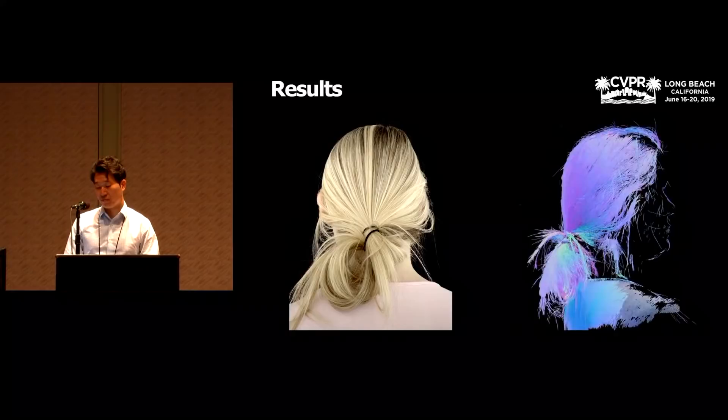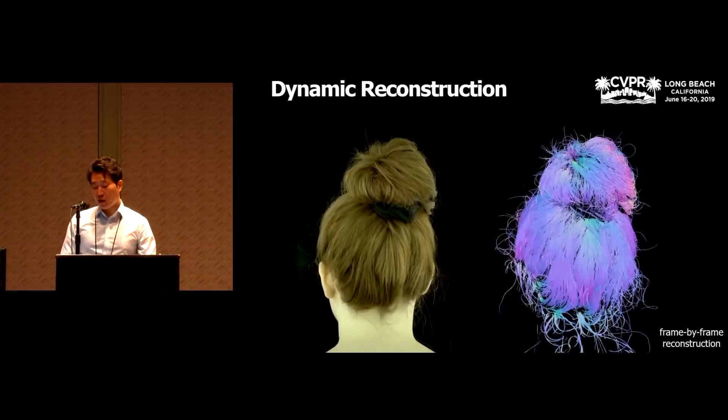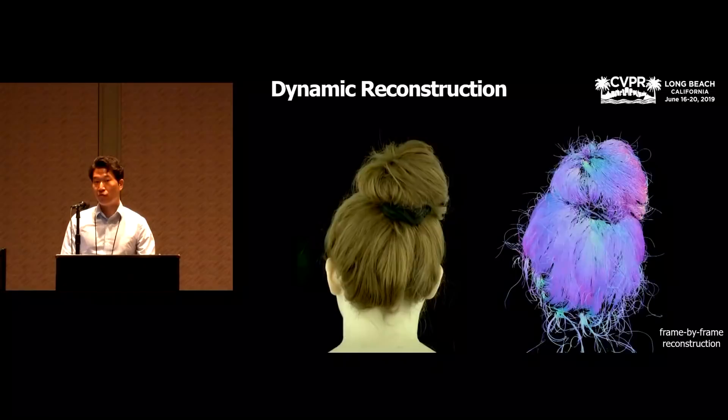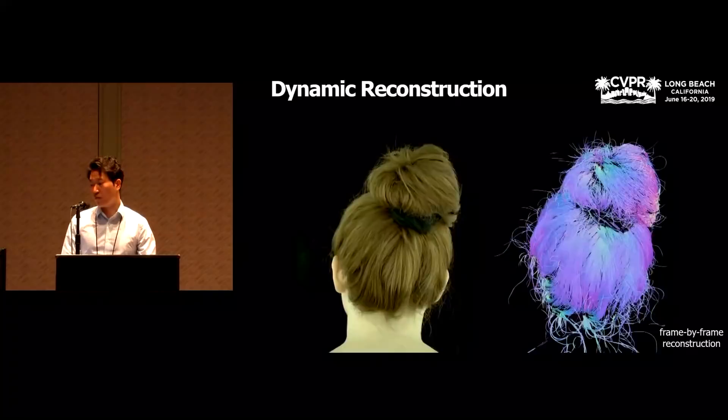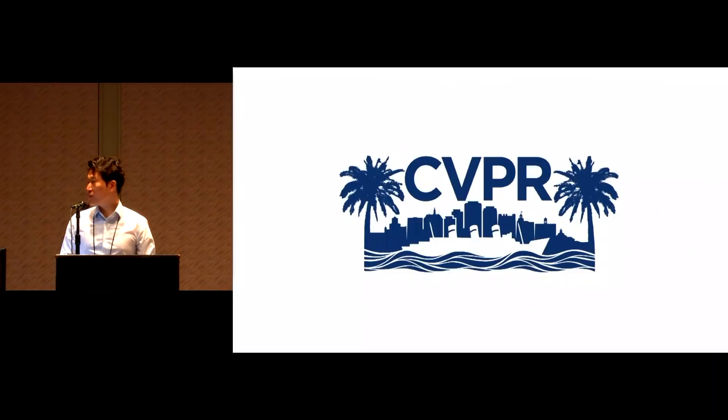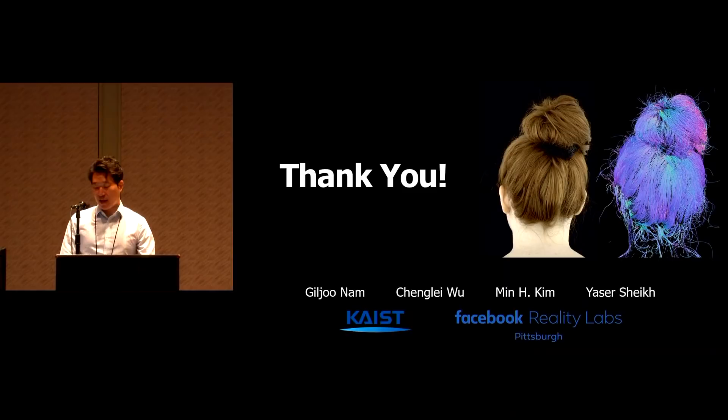And here's another example. It's long and bright hair. In our paper, we have demonstrated our method with various types of hair styles, including curly, straight, long, and short hair. In this case, we can also see the temporal coherence of a dynamic scene. We reconstruct the video frame-by-frame independently, but we can still see the temporal coherence of the strands. This demonstrates both the robustness and the accuracy of our method. Please visit us at the poster session. Its poster ID is 75.